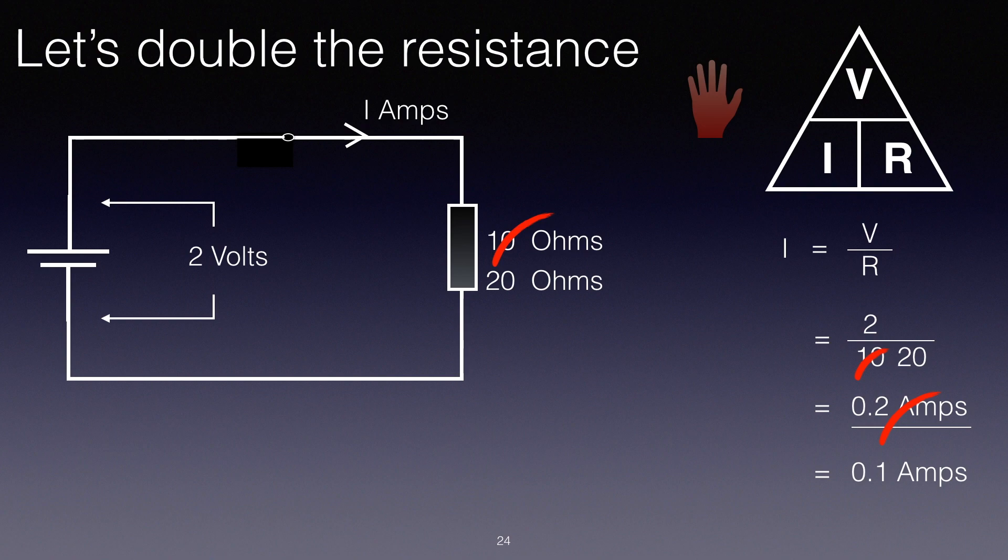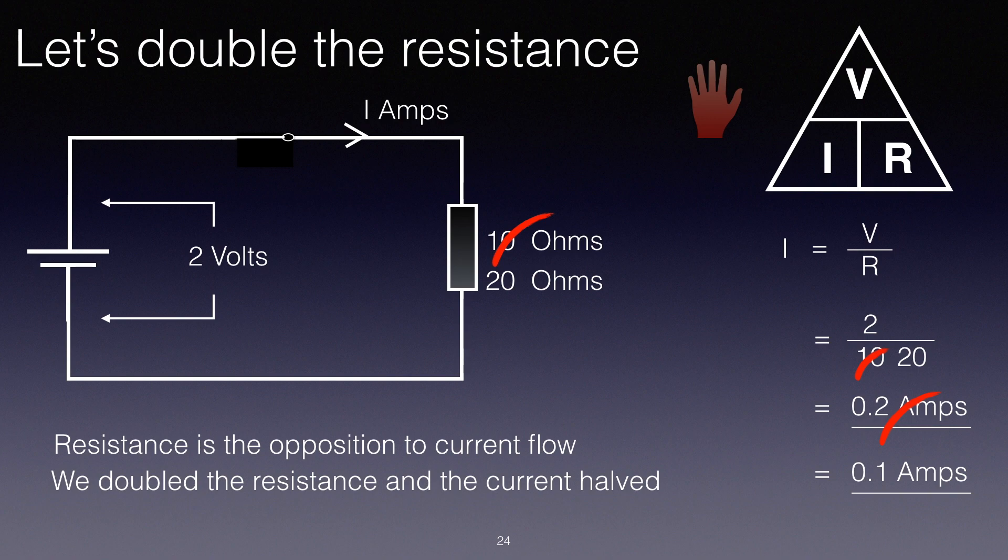And remember that resistance is the opposition to current flow. Resistance is the opposition to current flow, and we doubled the resistance and the current halved.